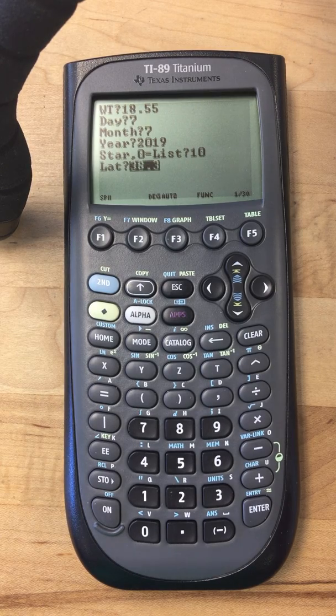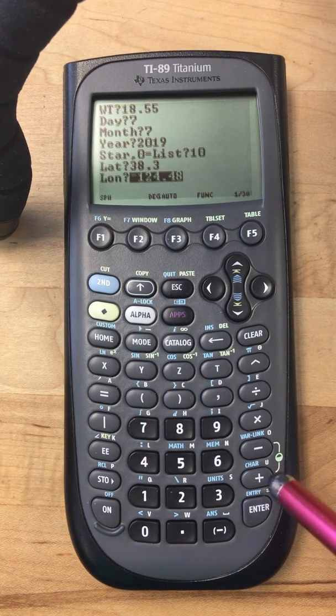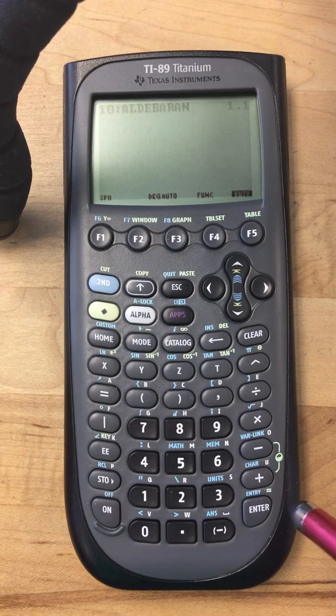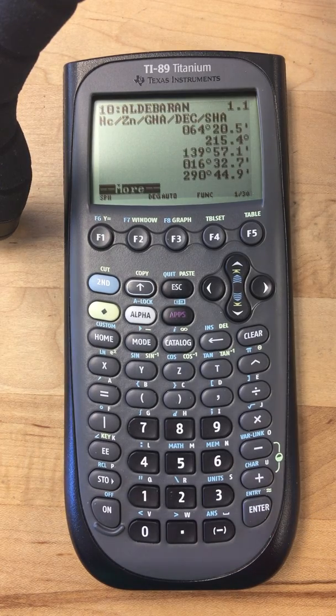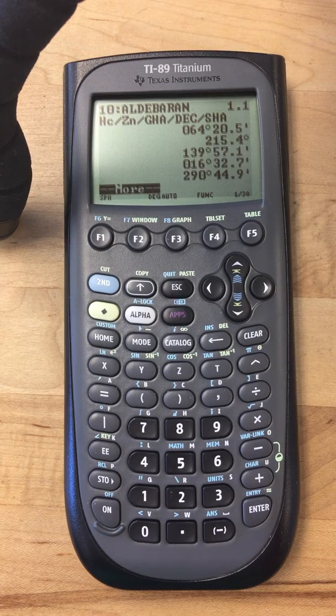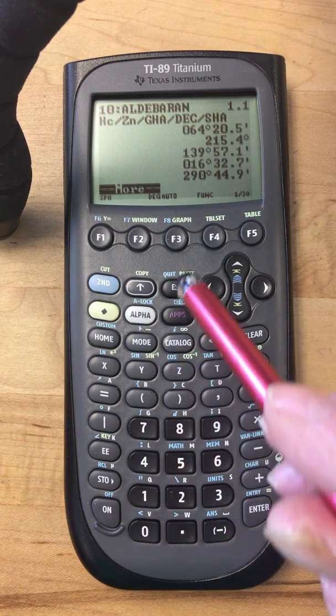And then that's 38.3, San Francisco somewhere, and then there you go. So that's working. That's then calculating the height and bearing and the almanac data for that star at that particular time.